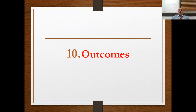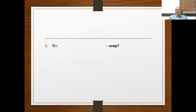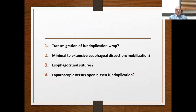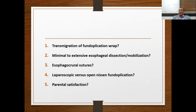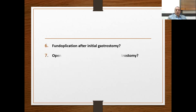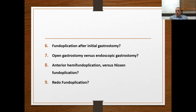Finally, regarding outcomes following all surgical procedures, especially fundoplication: key items to address include wrap transmigration, minimal versus extensive esophageal mobilization, esophagocrural sutures, laparoscopic versus open fundoplication, parental satisfaction, fundoplication after gastrostomy, open versus endoscopic gastrostomy, anterior versus Nissen fundoplication, and redo fundoplication.